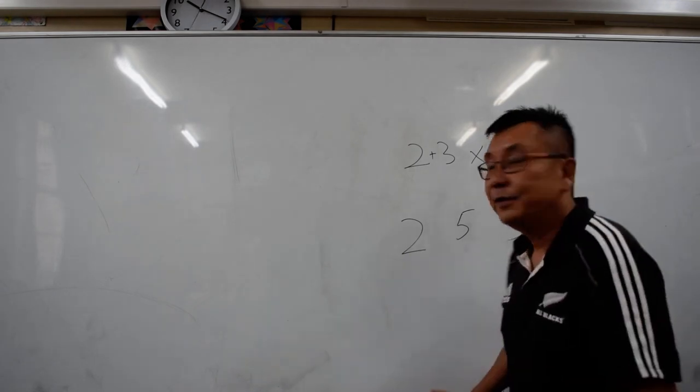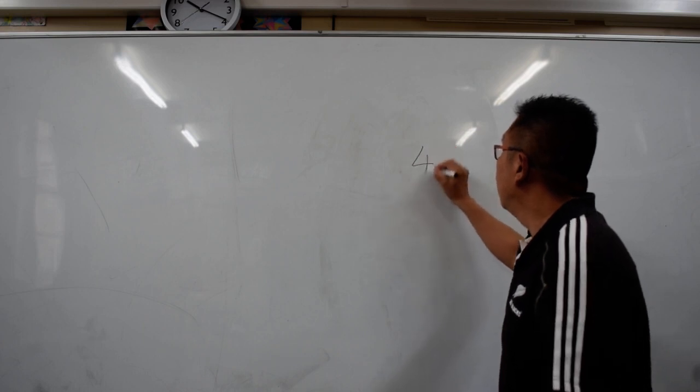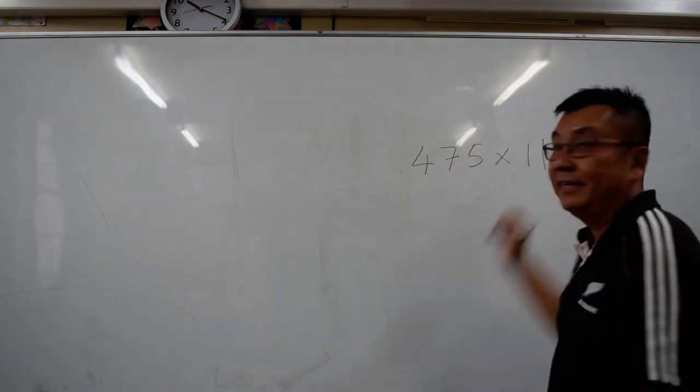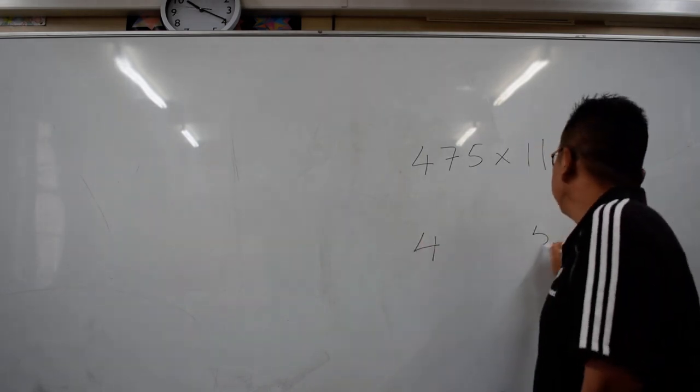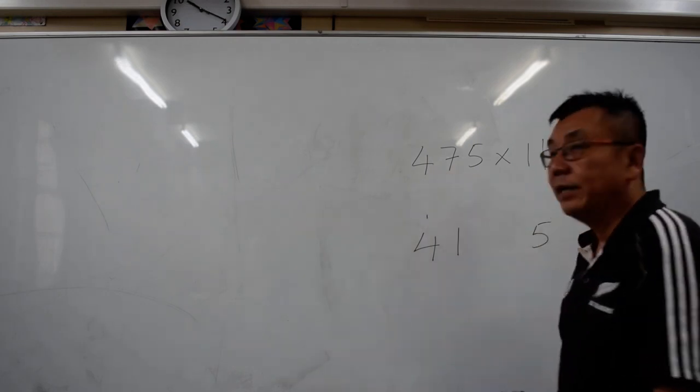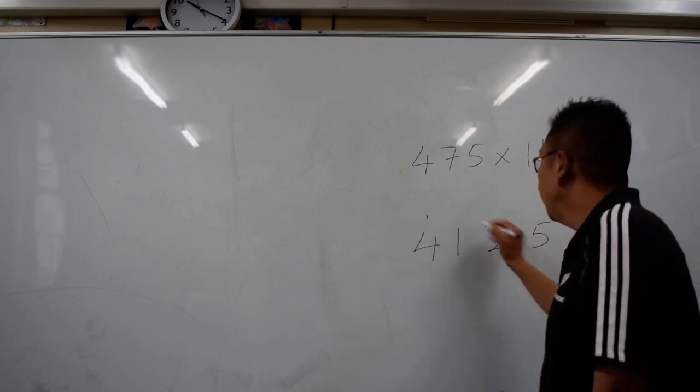Now we are going to do a more complicated 11 math expression. For example, 4, 7, 5 times 11. So 4 and 5 remain. So 4 and 7 is 11, so 1 carry up 1. And then 7 and 5 is 12, 2 carry up 1.